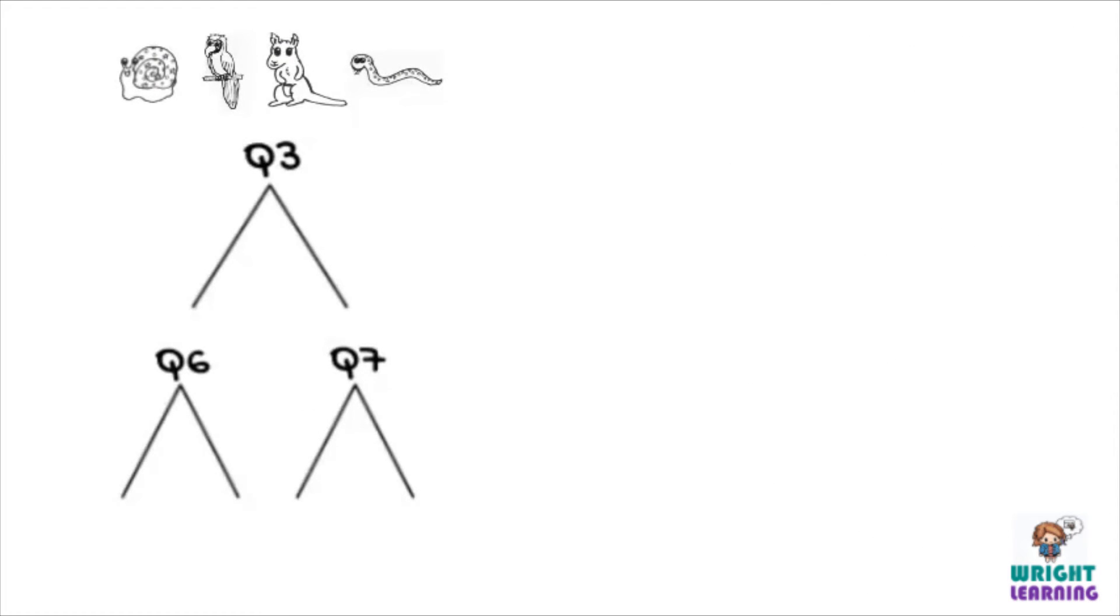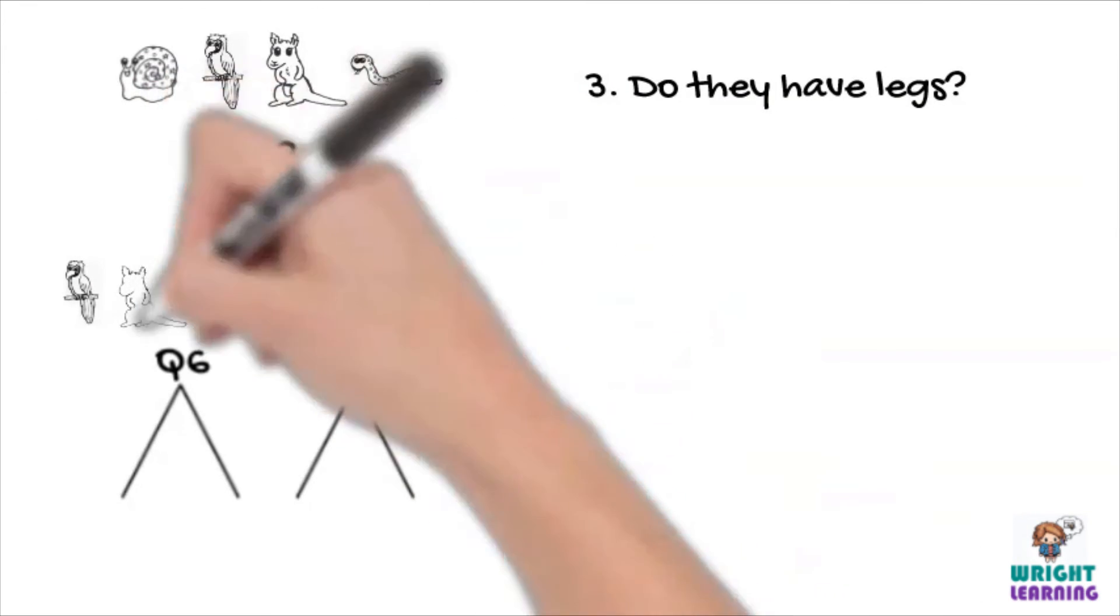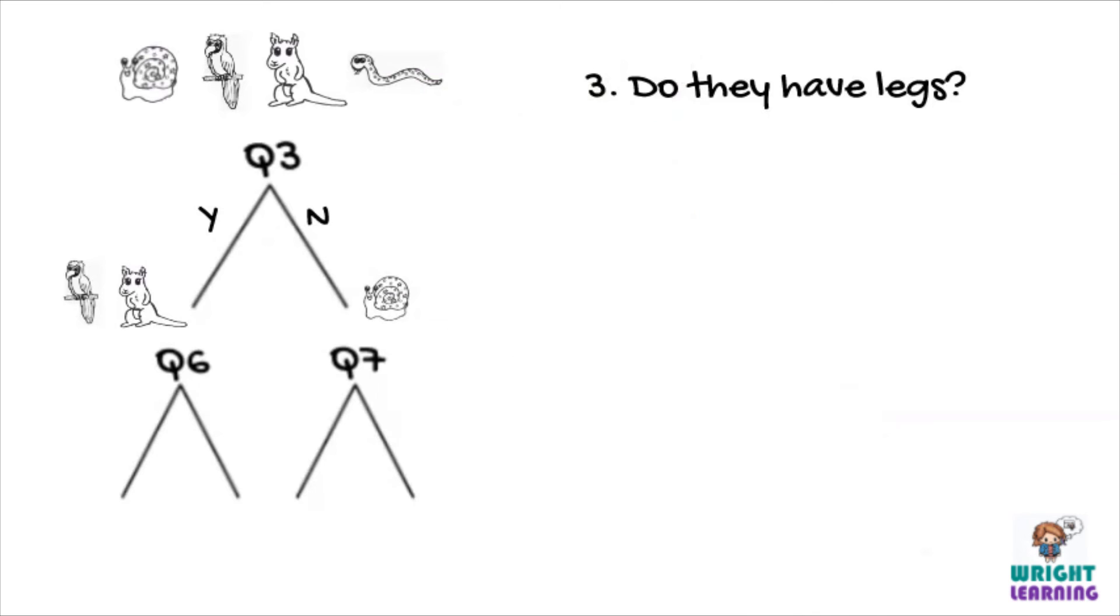Now we need to go back to our group of organisms that don't walk on four legs on the other side of our tree diagram. One way we can split this group in two is to ask, do they have legs, for which we can say, yes for the macaw and the kangaroo, and no for the snail and the snake.